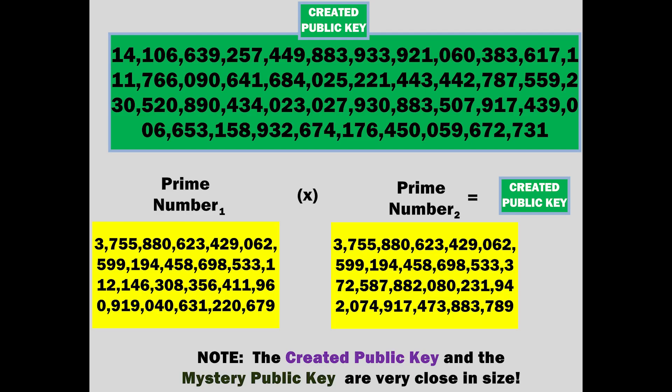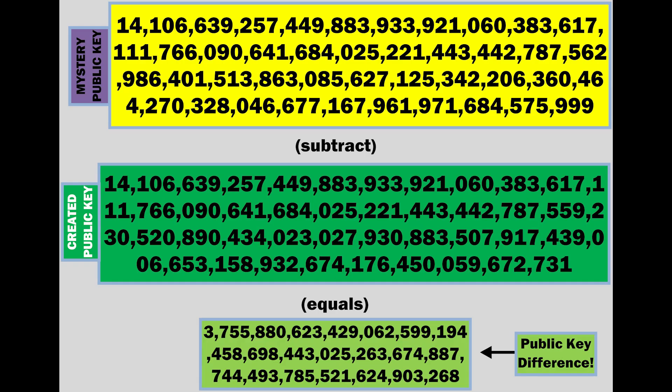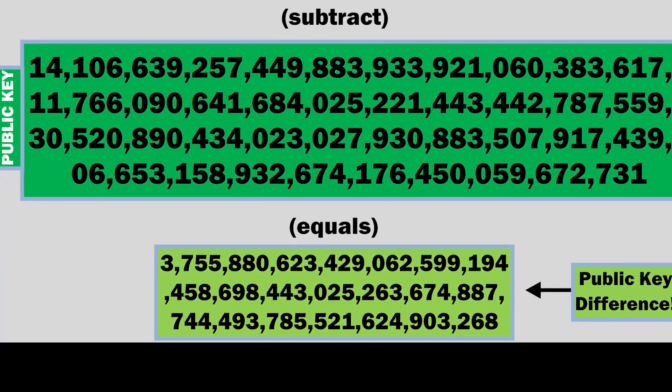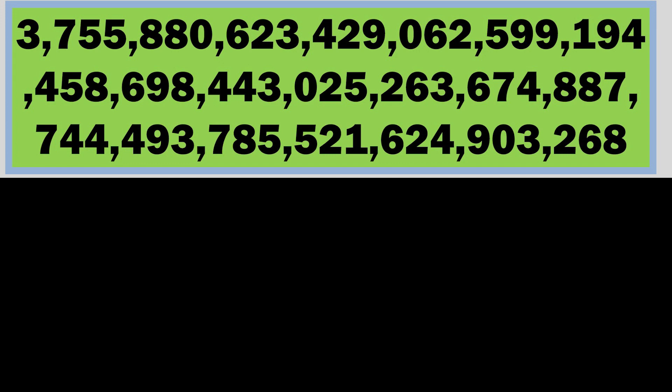Observe this created public key. Note that the created public key and the mystery public key are very close in size. Now, compare the created public key to the mystery public key. Subtract the created public key from the mystery public key — you will get this public key difference. Notice that it is a composite. But a composite of what?